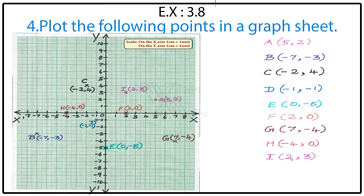Point I: (2, 3). The X value is 2 — from the origin count 0, 1, 2 on the X axis. The Y value is 3 — count 1, 2, 3 up on the Y axis. From X value 2 go up, and from Y value 3 come to the right. Where both lines meet, this is Point I at (2, 3).